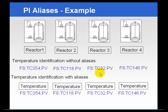Most of the people in the organization are not going to know that the temperature setting unit for reactor three is fs:tc32.pv. However, anybody in the organization could drill down, find reactor three in the hierarchy, and see that under that reactor there is a temperature alias — and therefore find that information without ever having to actually know the tag name.